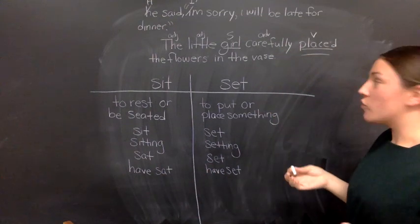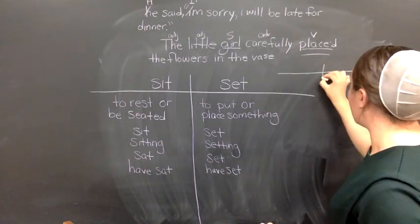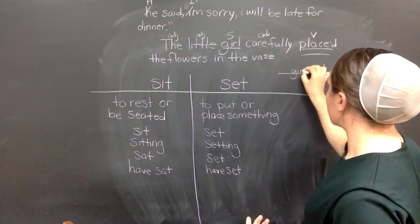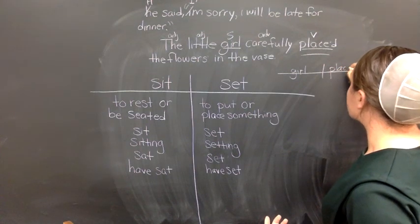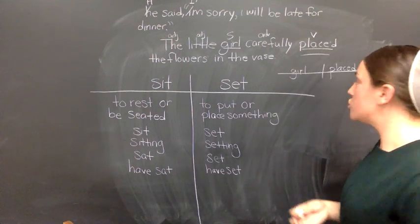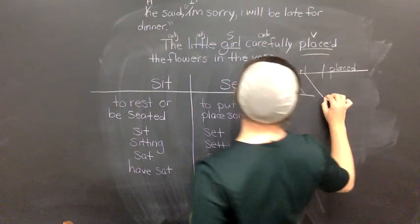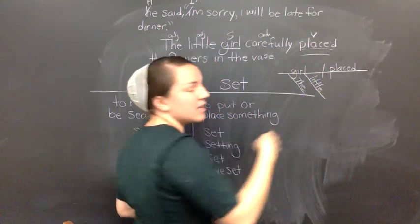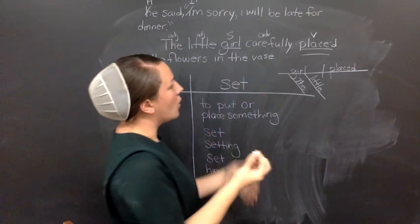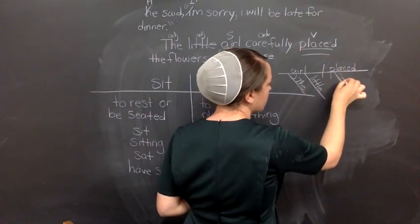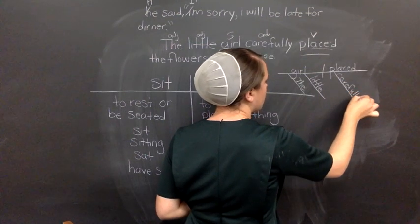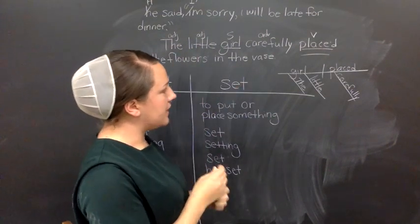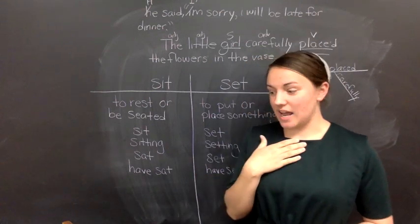So, when we would diagram this, we would put a straight line with a line dividing in the center. Our subject goes to the left and our verb goes to the right. Now, our describing words go right underneath the words that they're describing. So the and little would go right here, and carefully would go underneath placed. And that takes care of what we're going to diagram. The little girl carefully placed. We have our subject, verbs, and modifiers diagrammed.